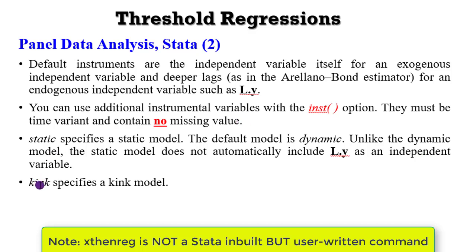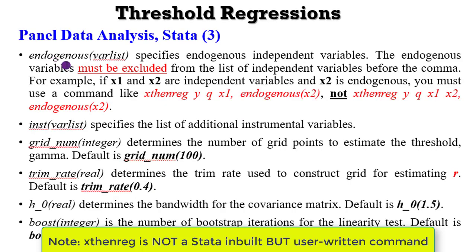You can also include kink as an option if you want to estimate a kink model. In case you have an endogenous variable, you only have to include them in the variable list that is in parentheses. The endogenous variable must be excluded from the list of independent variables before the comma. So you will not see X2 before the comma because X2 in this case is assumed to be endogenous.